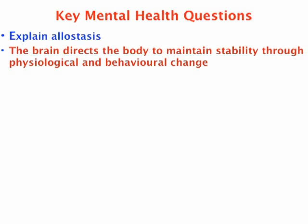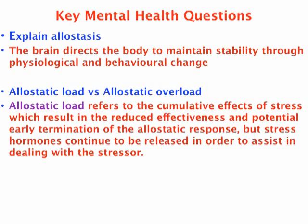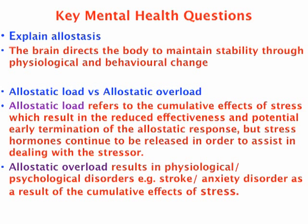Finally, allostasis. Allostasis is an umbrella term that describes the manner in which the brain directs the body to maintain stability in terms of our performance and ability to deal with a stressor through triggering large physiological and behavioral changes. For allostatic load, what you need to emphasize is that due to the cumulative effects of stress, our allostatic response becomes less effective in dealing with stressors — it may terminate early, but stress hormones continue to be released. When we reach allostatic overload, the body breaks down and we might develop a physiological disorder like a stroke, an ulcer, or a cardiovascular condition, or a psychological condition like a mood disorder or anxiety disorder. Overload is where we're tipped over the edge and develop a noticeable physiological or mental illness.